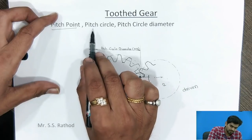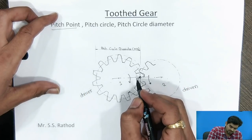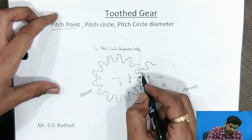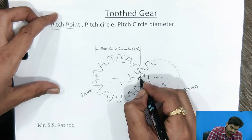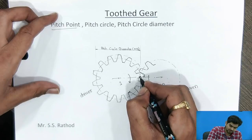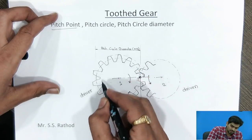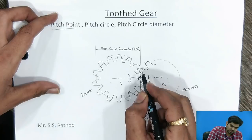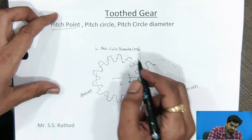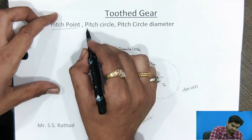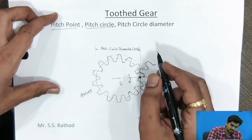Next one is pitch circle. The pitch circle is nothing but the circle which is drawn due to the pure rolling action of two gears. From the pitch point, if you draw a circle, that imaginary circle which occurs due to the pure rolling action is called the pitch circle. This circle is nothing but the pitch circle.